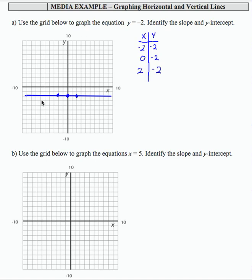And let's go ahead and label. So negative 2, negative 2, 0, negative 2, and 2, negative 2. And so we're asked to identify the slope and the y-intercept. Well, the y-intercept is here. So 0, negative 2 is the y-intercept.